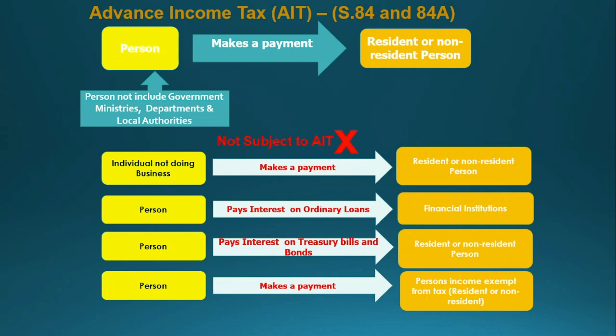When defining a person, there is no government, ministries, departments, or any local authorities included under this definition. So if you are a government department, government ministry, or a local authority, you need not deduct withholding tax imposed under Section 84 and Section 84A. But public corporations, government-owned businesses, and government-owned companies have to comply with these provisions.